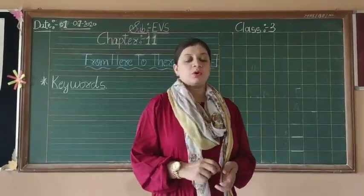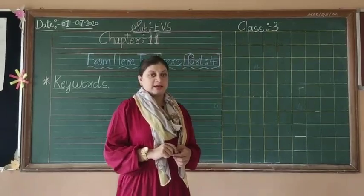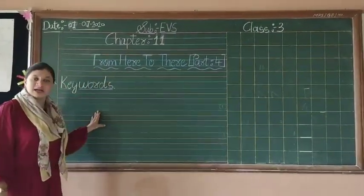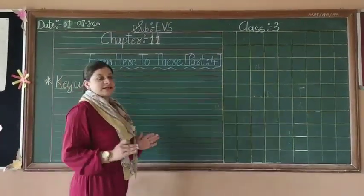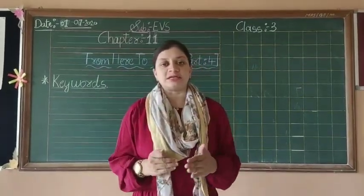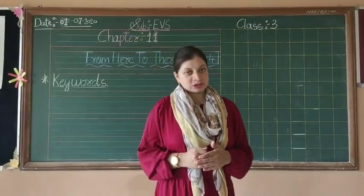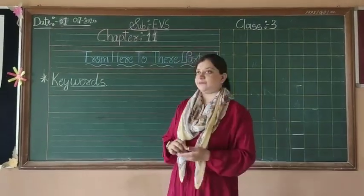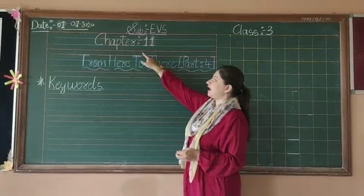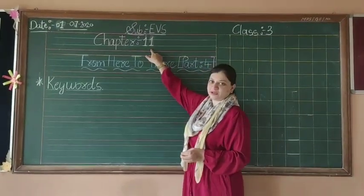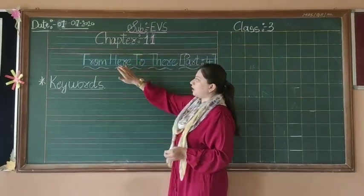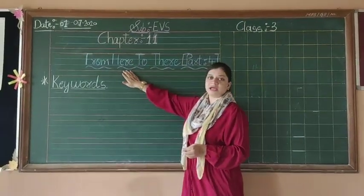Today in this video, we are going to see about the writing portion — the CW notebook. How you have to write in your CW notebook. First of all, you have to give the highlight in your first line: Chapter 11. After writing Chapter 11, you have to write the name of the chapter.